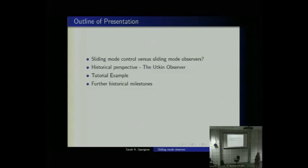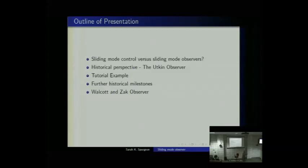I'm going to say a little bit about historical milestones — how we got from that place to where we are today. Sometimes in the evolution of the technology, we have key points, key pieces of knowledge which enable us to make big progress — disruptive thinking that makes a paradigm change. One such piece was work by Walcott and Zak, who really changed the paradigm, making a step change from the Utkin Observer.